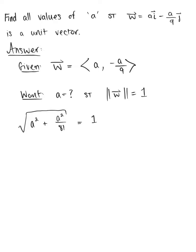So to remove those square roots, we'll go ahead and square both sides of this equation. The square and the square root cancel each other out, leaving us with a squared plus a squared over 81 is equal to 1.